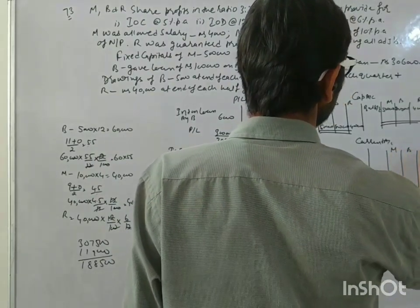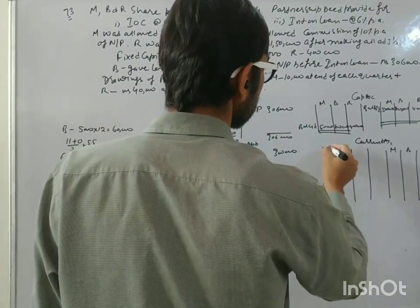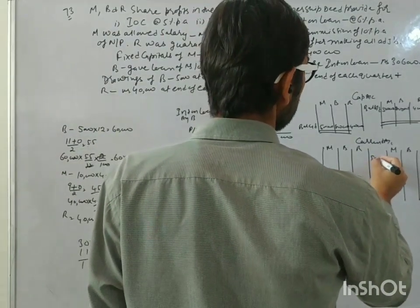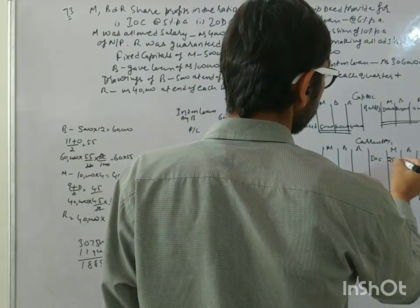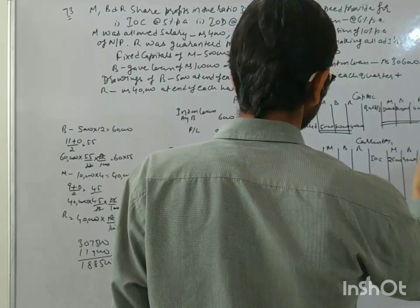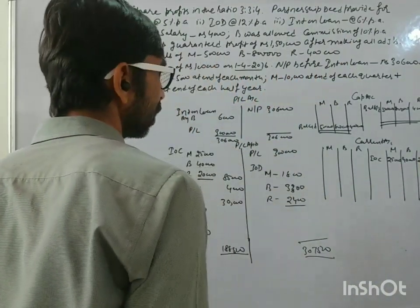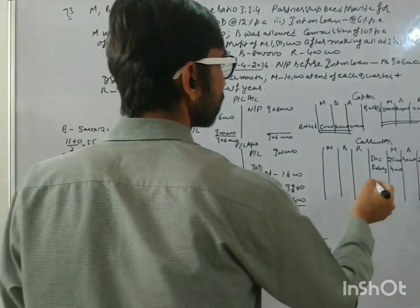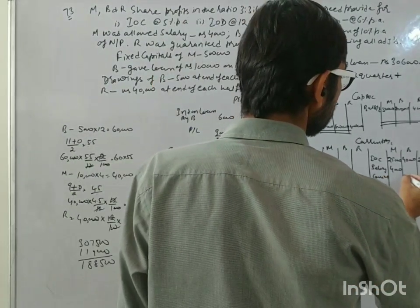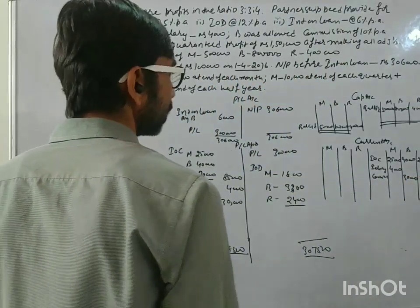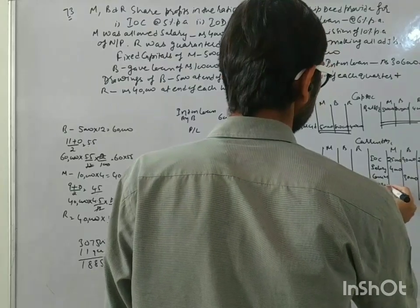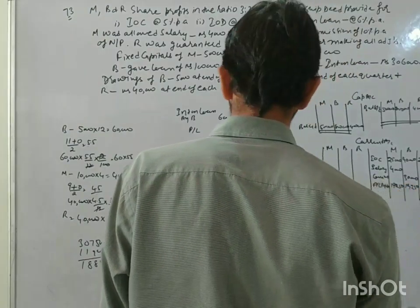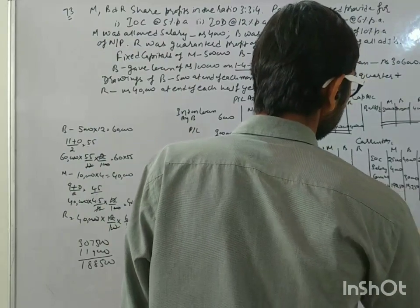Current account. First thing, interest on capital: 25,000, 40,000, and 20,000. Salary to M, 4,000. Commission to B, that is 30,000. And P&L appropriation, that is 19,250, 19,250, and 1,50,000.